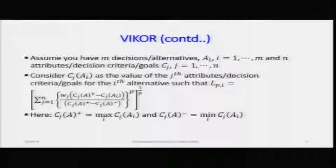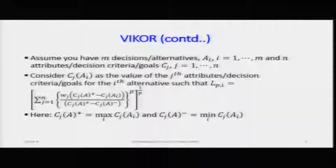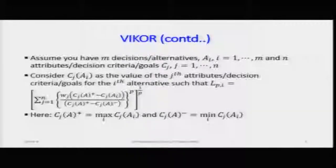This slide captures the essence of the approach. As usual, consider the nomenclature: we have m number of total alternatives or goals to achieve, and for each goal we consider n different criteria or attributes. The suffix i changes from 1 to m, and j changes from 1 to n.